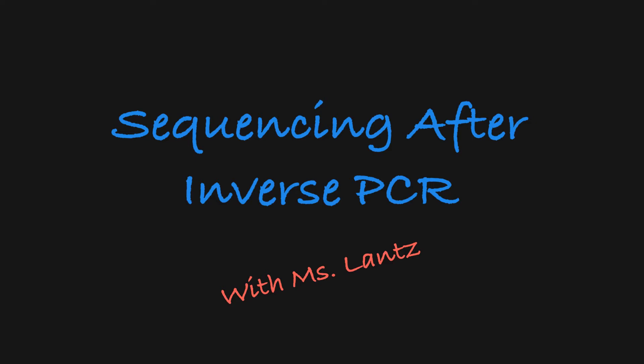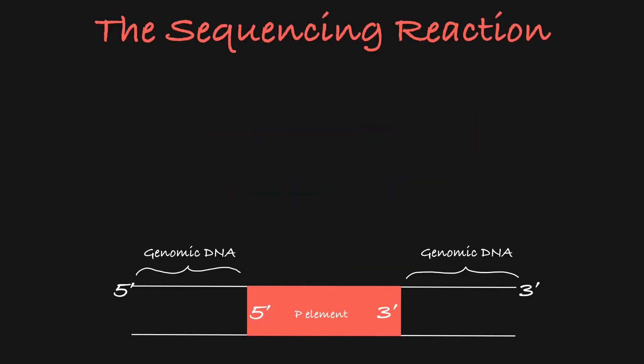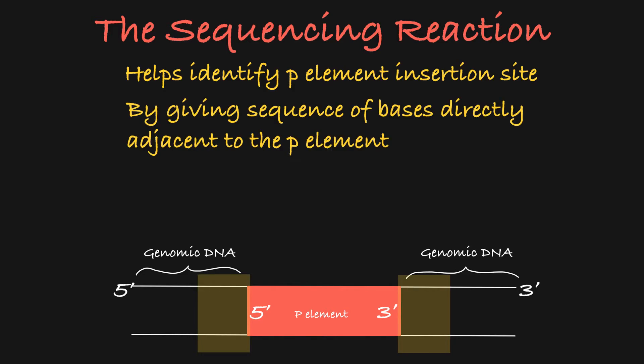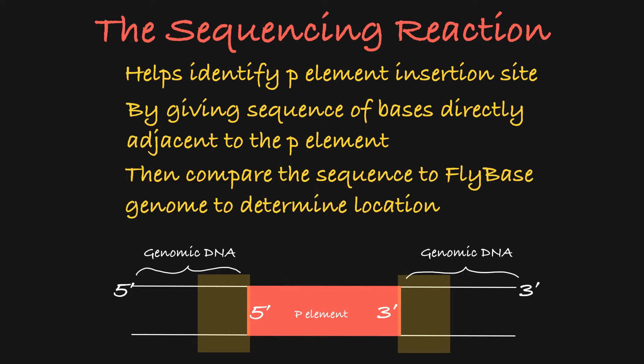In this video, I'll walk you through the setup of the sequencing reaction that you'll complete after inverse PCR. This sequencing reaction will allow you to identify the insertion site of your P element by giving you the sequence of bases directly adjacent to the end of your P element, which you can then compare to the genomic sequence stored in FlyBase.